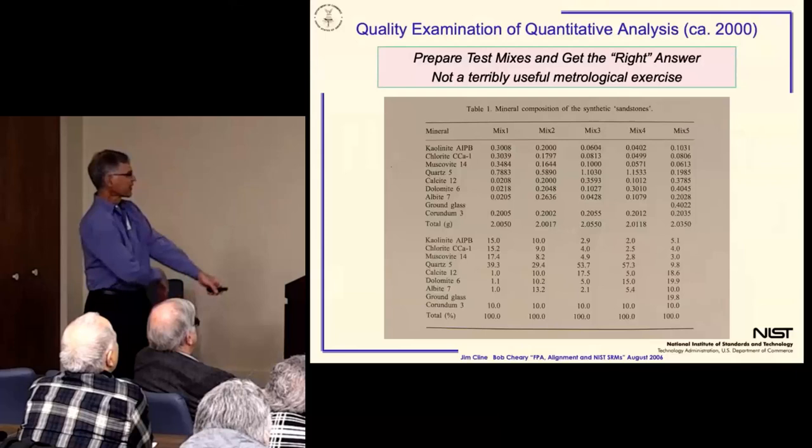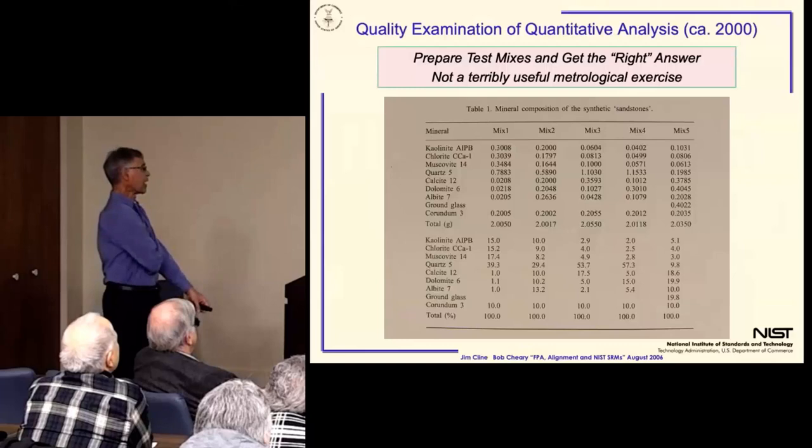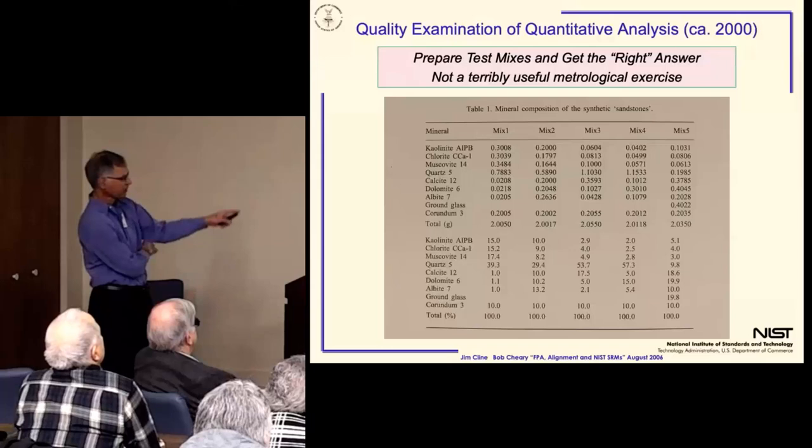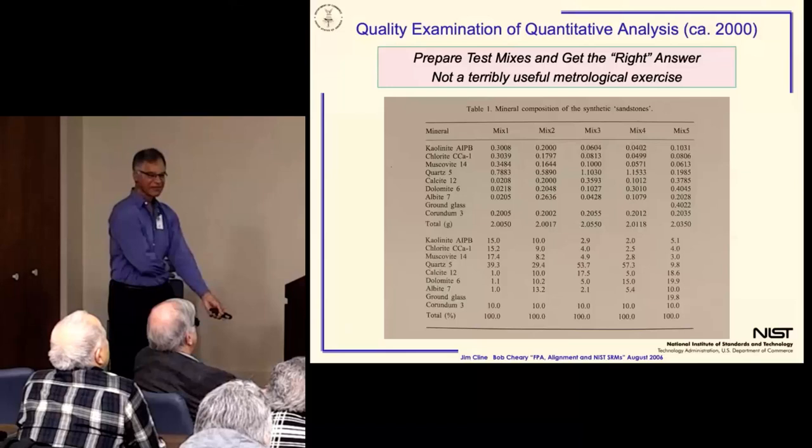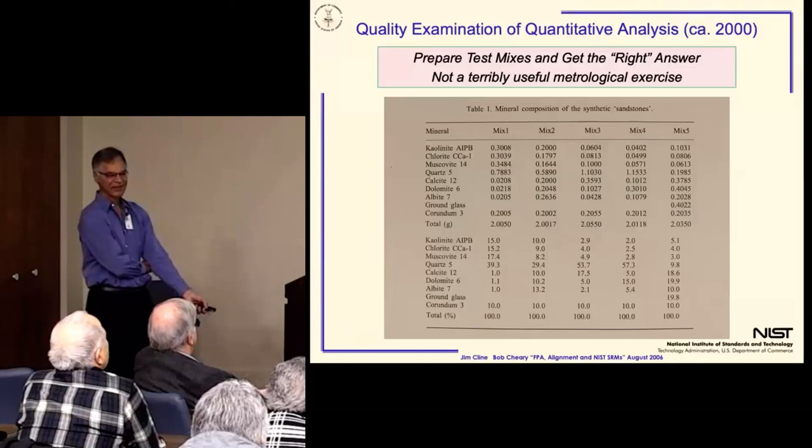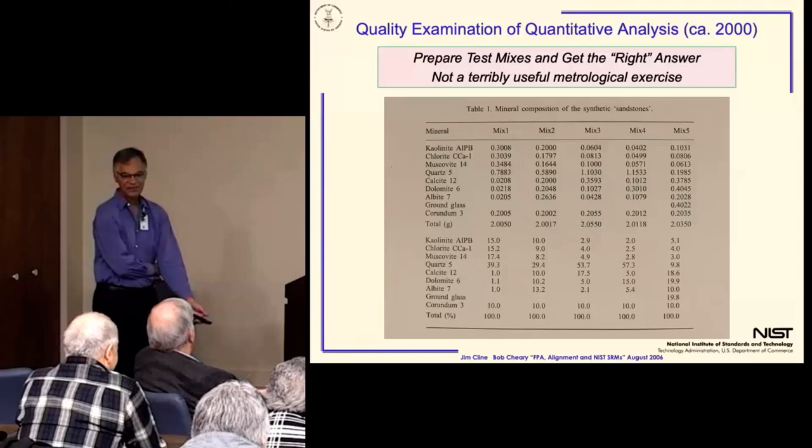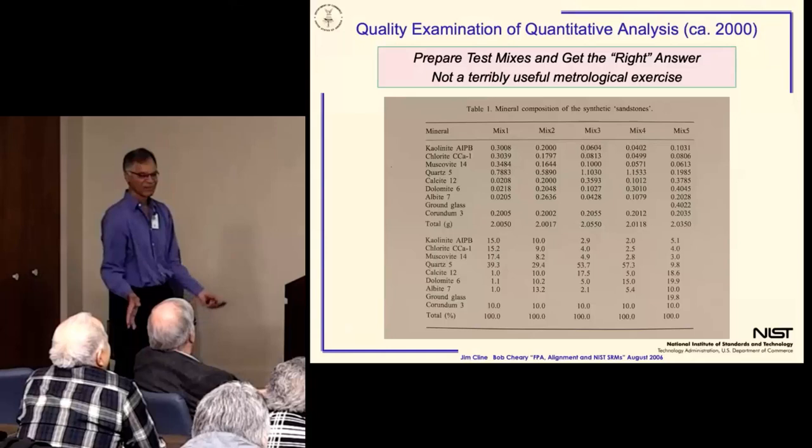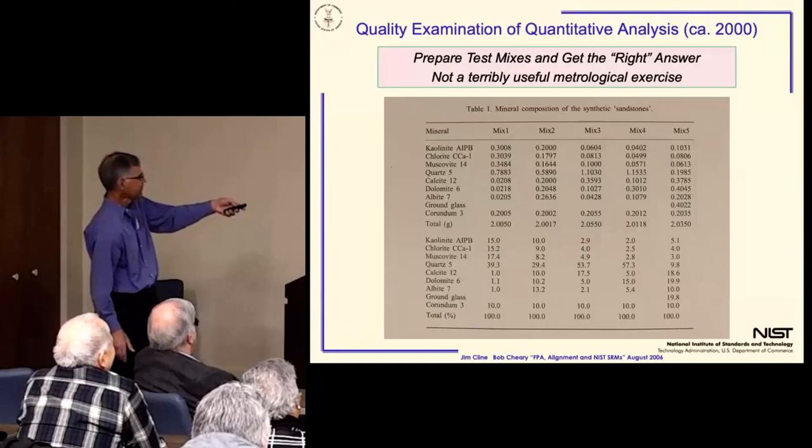This is an example of a 1990s type high quality study. There were numerous papers of this type where you basically would see the authors preparing synthetic mixtures of something they were interested in and then measuring it and say, see, I got the right answer. And this is commendable and all that, but it really isn't very useful in figuring out what the metrological limits are on quant by powder diffraction.